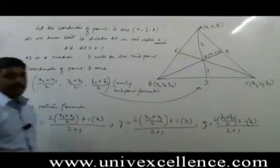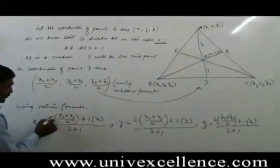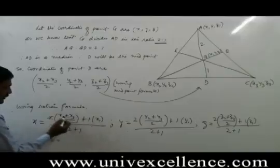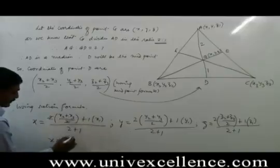So the 2s cancel, and we get X = (X₁+X₂+X₃)/3, Y = (Y₁+Y₂+Y₃)/3, and Z = (Z₁+Z₂+Z₃)/3.